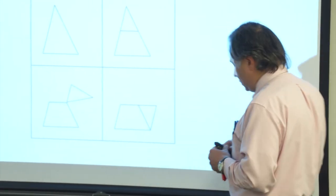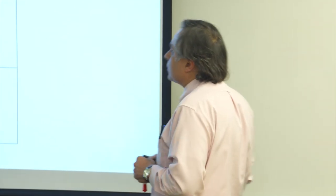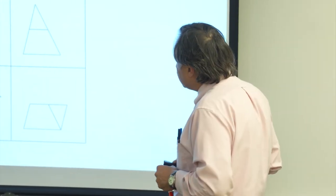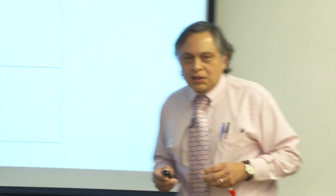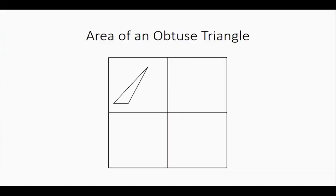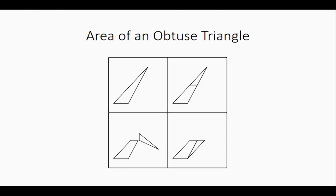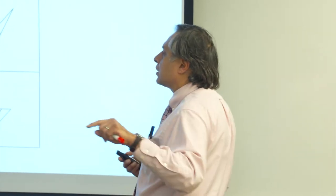This is a neat way to visualize where that formula comes from. Even if we have a triangle tilted too far in one direction, you can still do the same: cut across the middle, tilt, and obtain a parallelogram. So this works for any triangle — you can form a parallelogram quite easily by simply cutting across the middle.